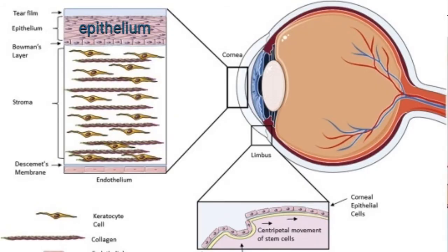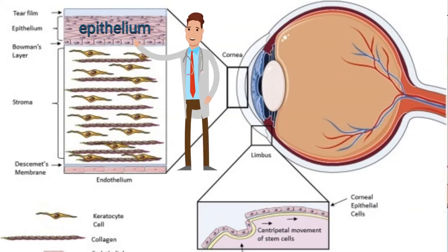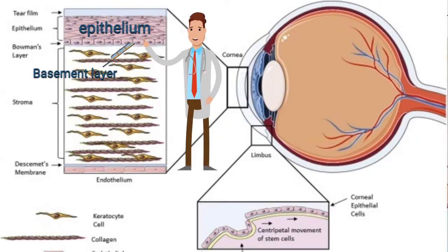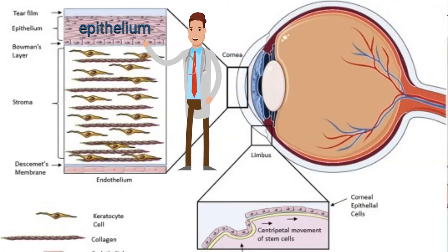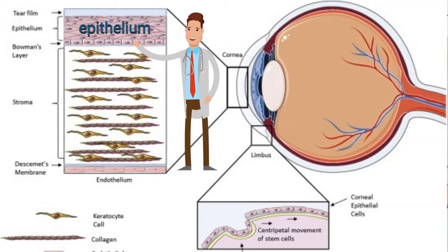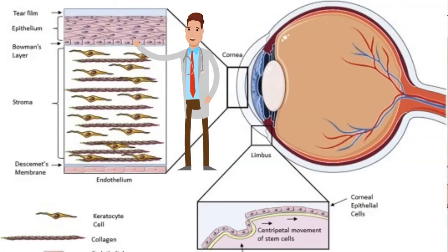The epithelium is around four to six layers thick. The basement layer, which is the deepest layer, is the only regenerative layer. These cells become more and more flattened as they go to the surface. They are bound together by tight junctions so that they do not allow fluid from the tear film to enter into the stroma, helping optimal hydration of the stroma and preventing stromal edema. There is also a basement membrane found only at the basal layer.